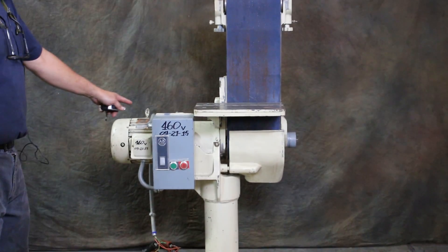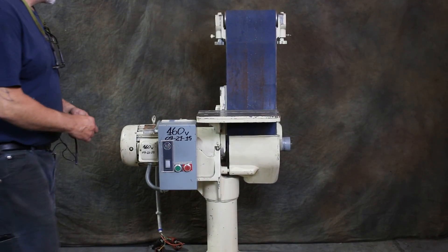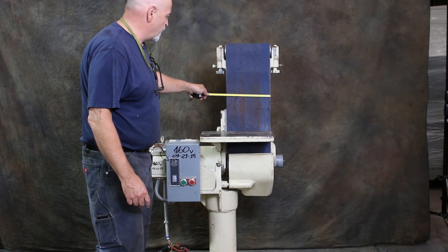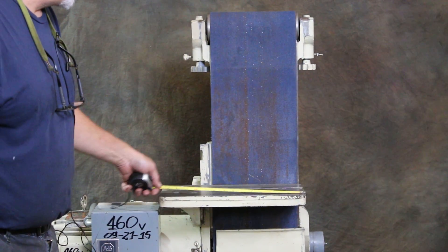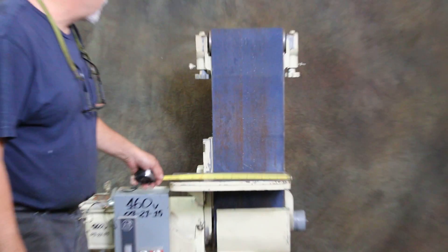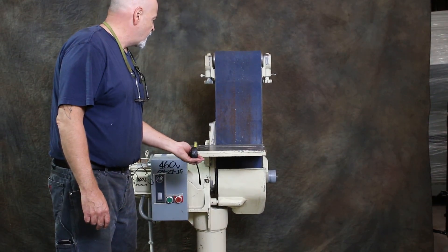It's currently wired for 460 volts and this has a 10 inch platen here, a 10 inch wide belt by 70 inches completely around. Your working table here is 16 inches by 9 inches.